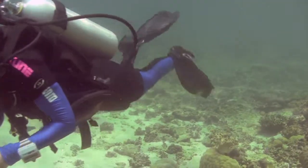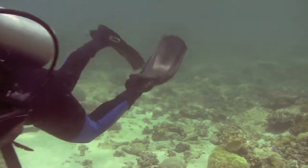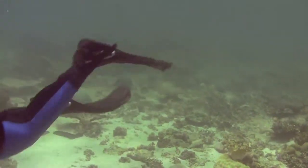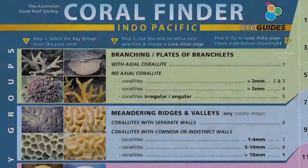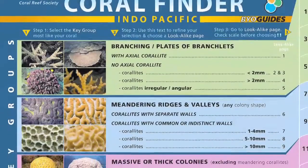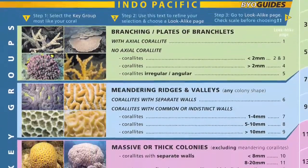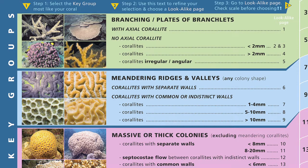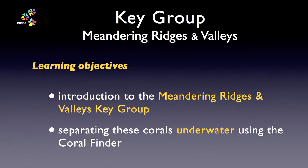Welcome to the fifth training movie in the Coral Finder Toolkit training movie series. In the previous movie we introduced the Coral Finder key groups using the branching key group as an example. In this movie we will demonstrate the meandering key group while focusing on some new terms and tips for how to work smart.